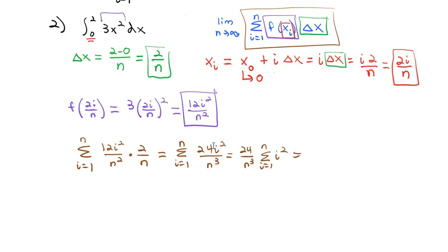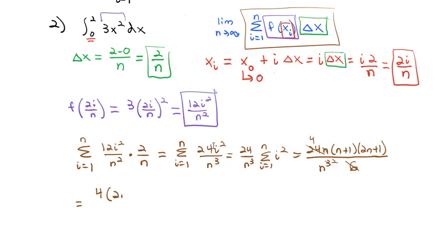We have a formula for the sum of i squared. Plugging in: 24/n³ times n(n+1)(2n+1)/6. Simplifying, 24/6 is 4, and n/n³ is 1/n². Distributing gives us 4 times (2n² + 3n + 1) over n², which is (8n² + 12n + 4) over n².